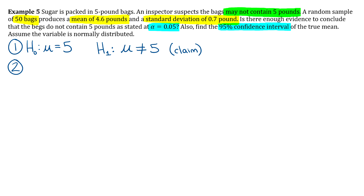For step two, since we're talking about means, we either use a Z-test or a T-test. It comes down to whether we have the population standard deviation. The question gives us a standard deviation, but it's for the sample — not the population. So the population standard deviation is unknown, meaning we use a T-test. The question doesn't state a method, and we only learned one for T-test, so let's use the p-value method.